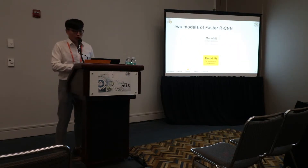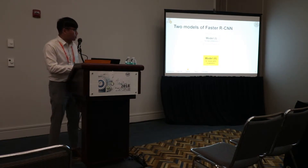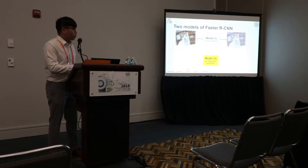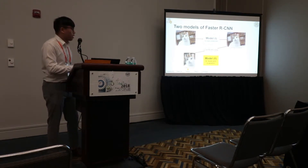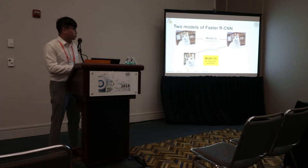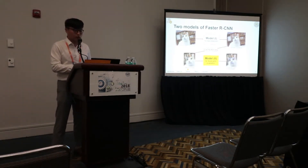I have two models of Faster RCNN. I detect the cat face in the cat image using model 1, then crop the face area, and localize the facial parts in the cat face images using model 2.